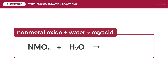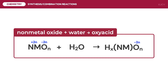The last synthesis reaction is the reaction between a non-metal oxide and water, which forms an oxy acid — an acid containing a hydrogen ion and an oxygen ion. To determine the oxy acid product, we find the oxidation number of the non-metal in the non-metal oxide by assigning negative 2 to oxygen and finding the value that makes the total oxidation number of the compound zero.